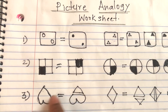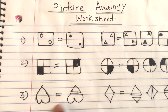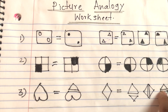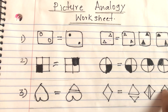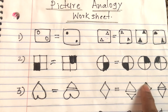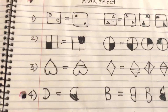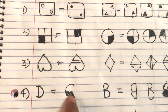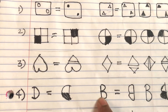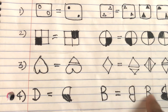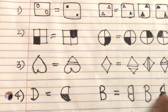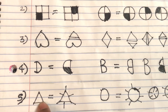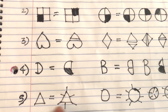For the third problem, a heart is getting cut at the top, so if there is a diamond, the answer is a diamond cut at the top — not at the bottom, not sideways, not vertically. For the fourth problem, D is converted into the mirror image of D with the bottom part dark. So if there is a B, we find the mirror image of B with the bottom part dark — that's the answer.